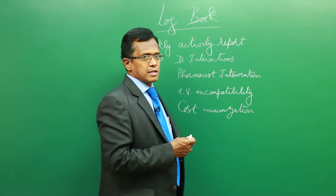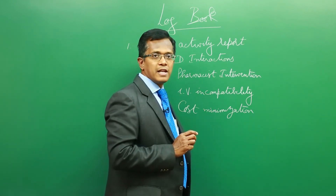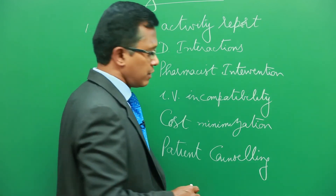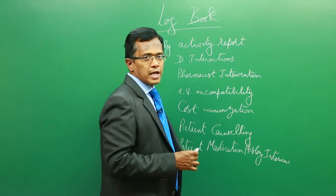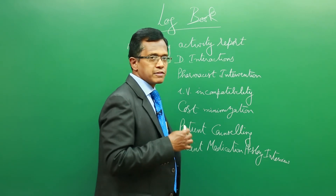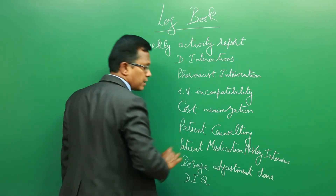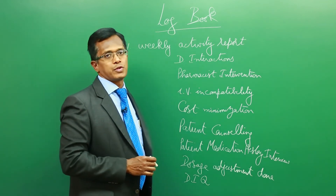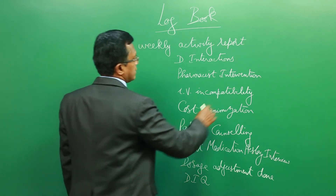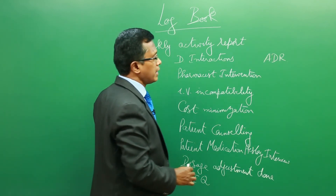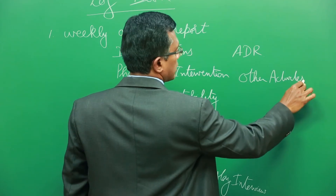Apart from these activities, if the clinical pharmacist does any patient counseling-related activities, that also needs to be documented. Patient counseling or patient medication history interview, any dosage adjustment done in the prescription — especially for hepatic or renal failure patients — if any drug information queries are answered by the clinical pharmacist, that need to be reported. Apart from this, adverse drug reaction monitoring also needs to be reported, along with any other activities done by the clinical pharmacist.